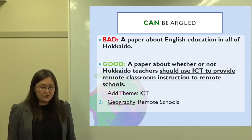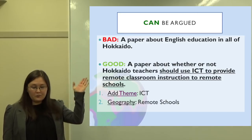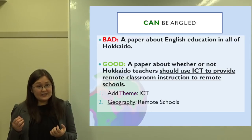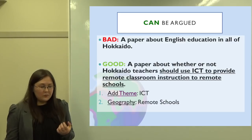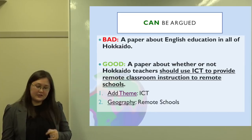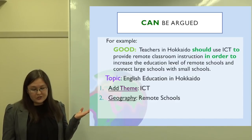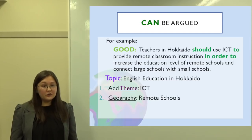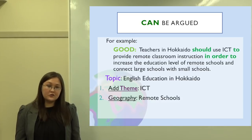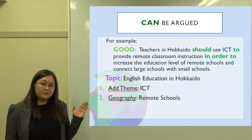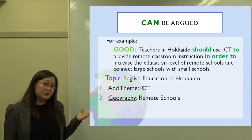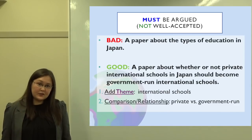As you saw in the previous clip, it would be bad to write a paper about education in all of Hokkaido, even if narrowed to English. A good approach would be to add the theme of ICT and narrow by geography to remote schools. After narrowing sufficiently, a good thesis statement would be: 'Teachers in Hokkaido should use ICT to provide remote classroom instruction in order to increase the education level of remote schools and connect large schools with small schools.' Very specific — you can see the author's opinion, what should they do and why. Good use of words like 'should,' 'to,' and 'in order to.'